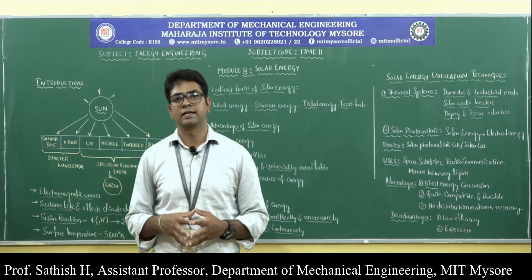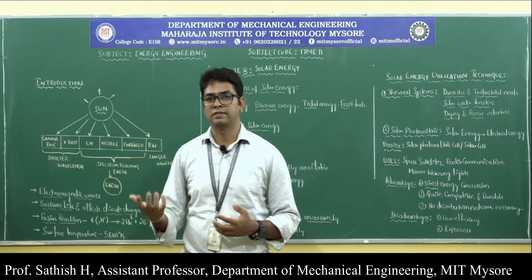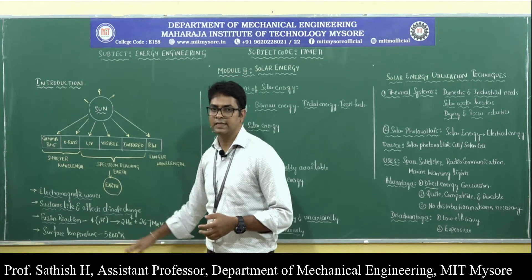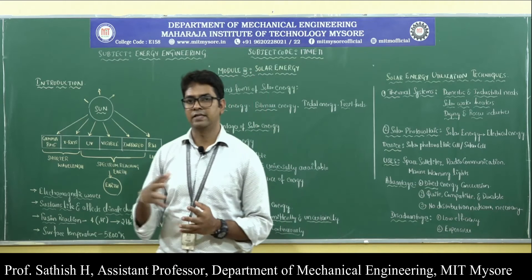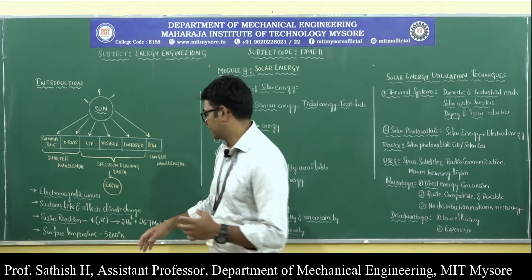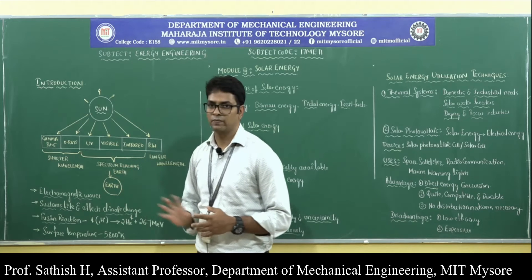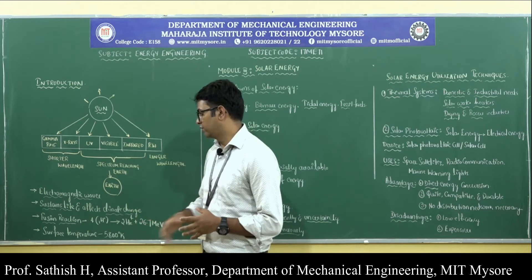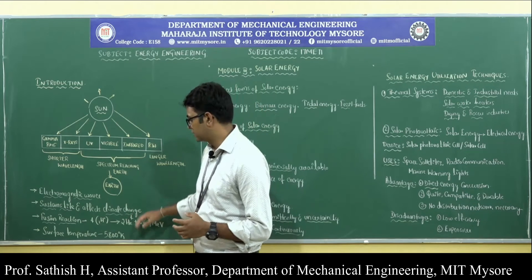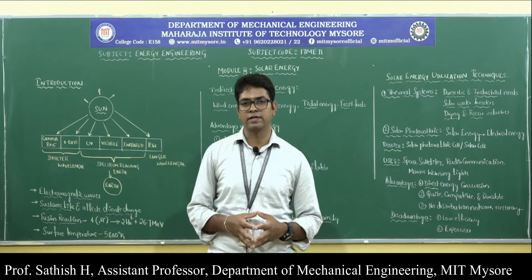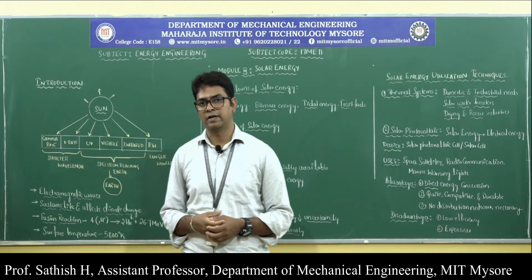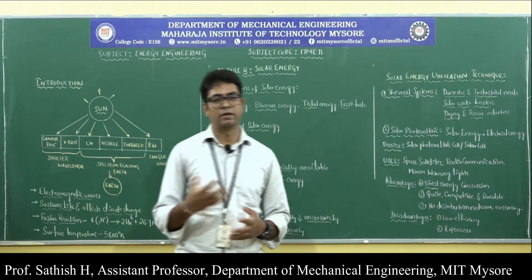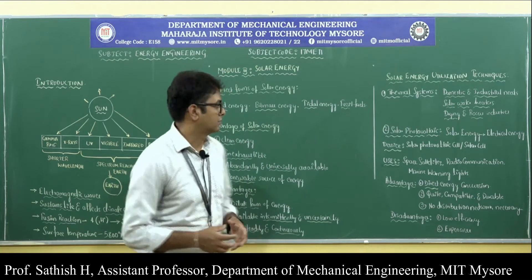Because of this fusion process, the Sun releases an enormous amount of energy. The surface temperature of the Sun is in the order of 5800 Kelvin — a very high temperature. This energy from the Sun is transmitted via electromagnetic waves and eventually reaches the Earth.